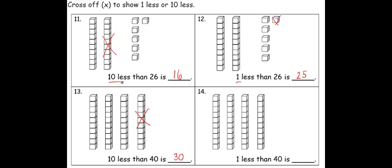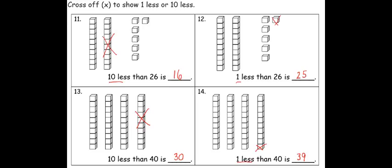Finally, I'm asked what is one less than forty. I have my four groups of ten to show forty. I'm just going to cross off one of those cubes, since I'm showing one less. That leaves me with three groups of ten and then nine cubes. So one less than forty is thirty-nine. You can see how using these pictures is helping to lead us to the patterns that we see when we add or subtract one and ten.